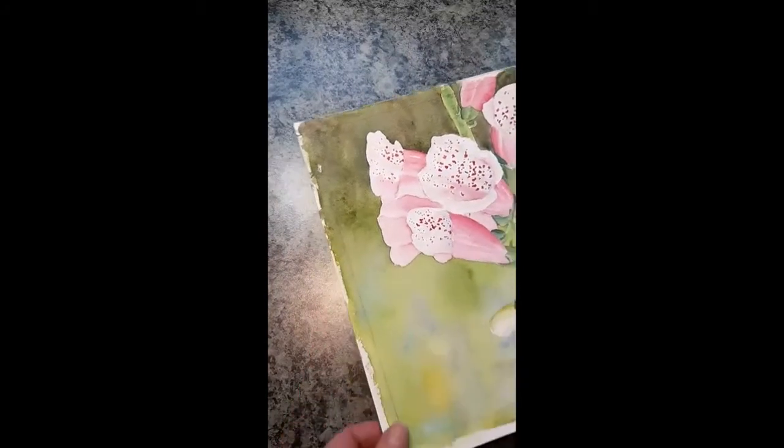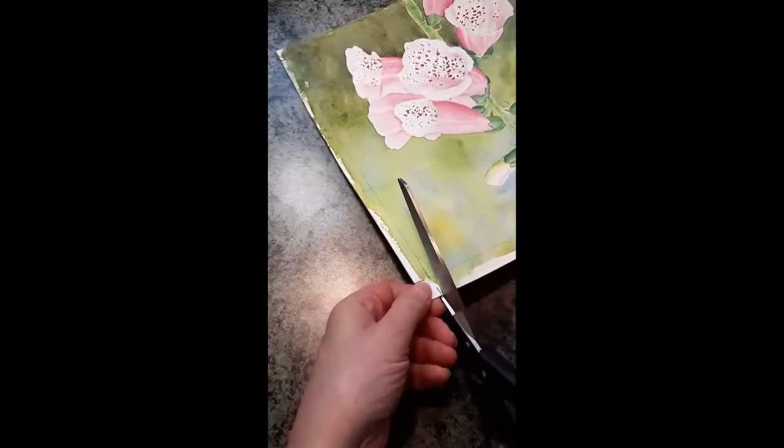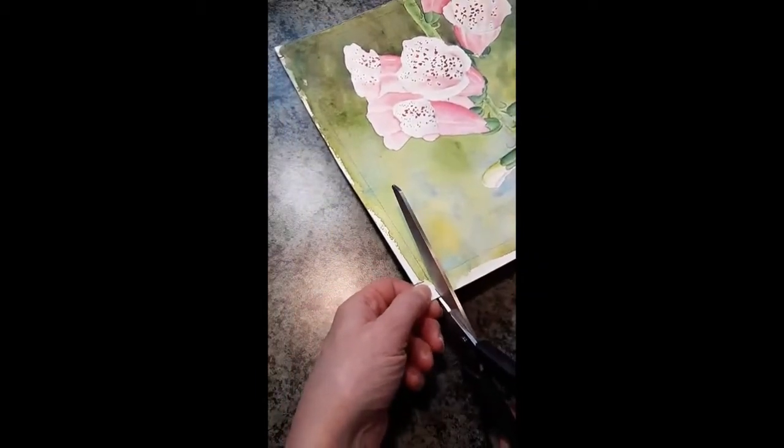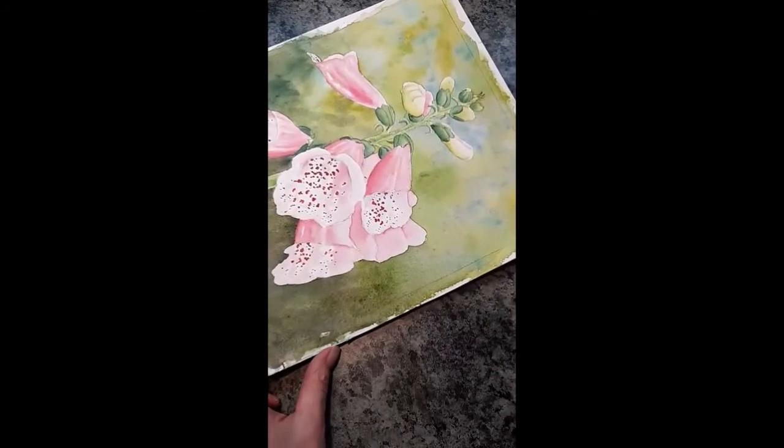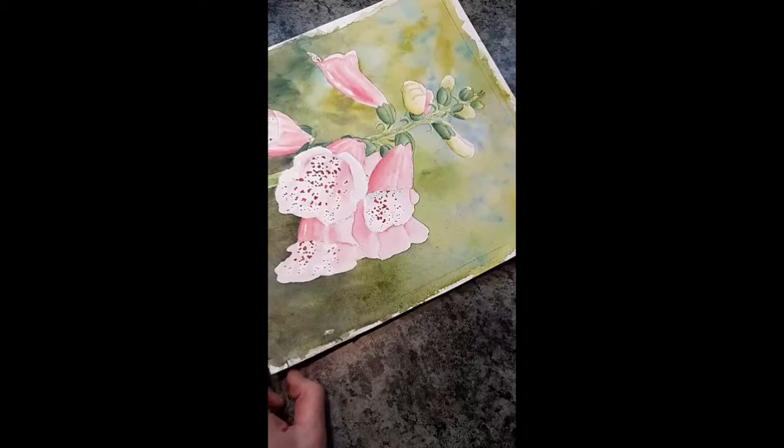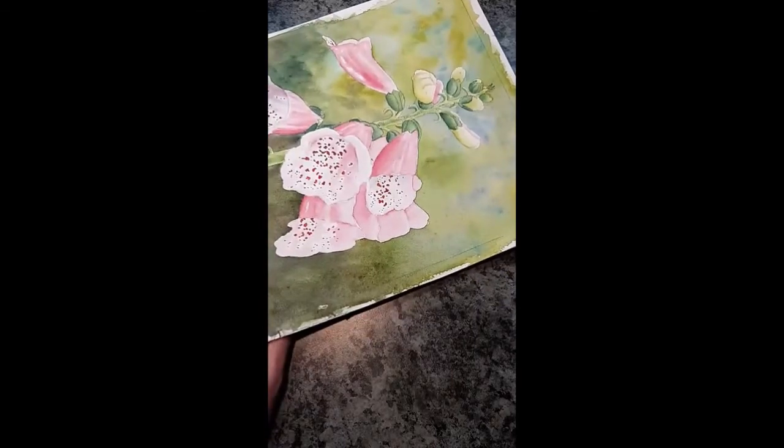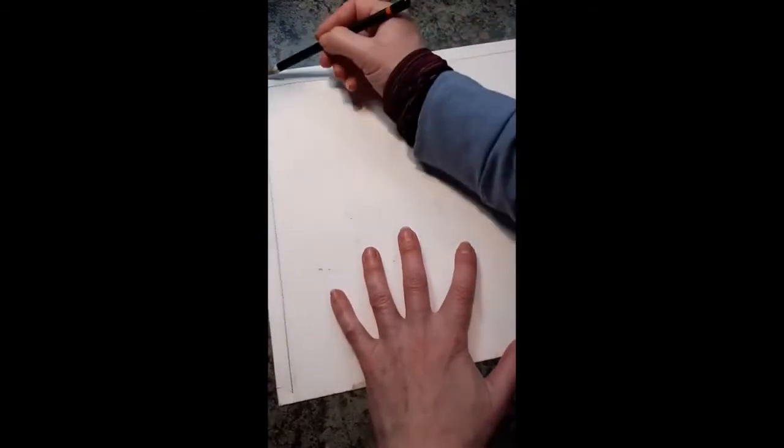The next step is I take a pair of scissors and I just cut the tip of the paper, just create a little notch all the way around. So I end up with eight notches at the end, and then we move on to the back of the painting.